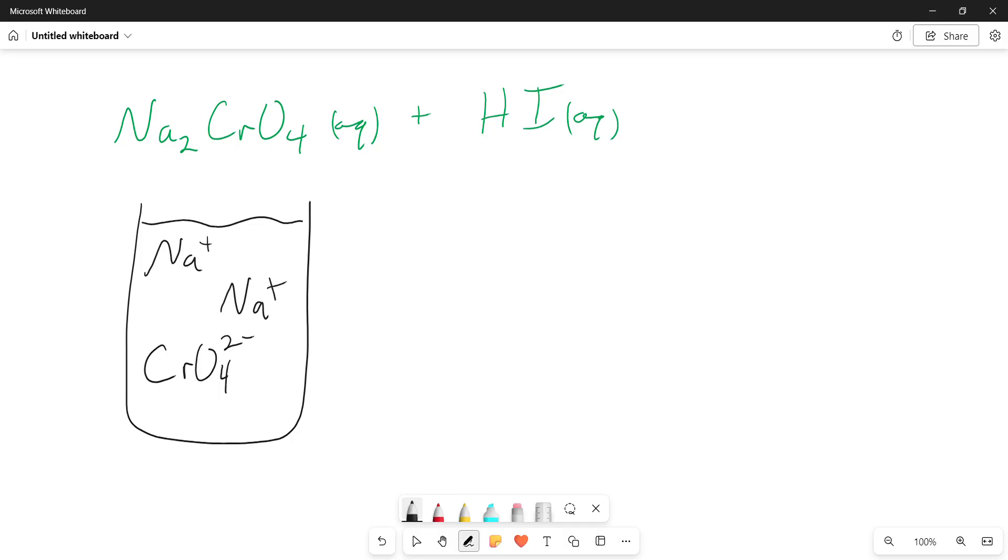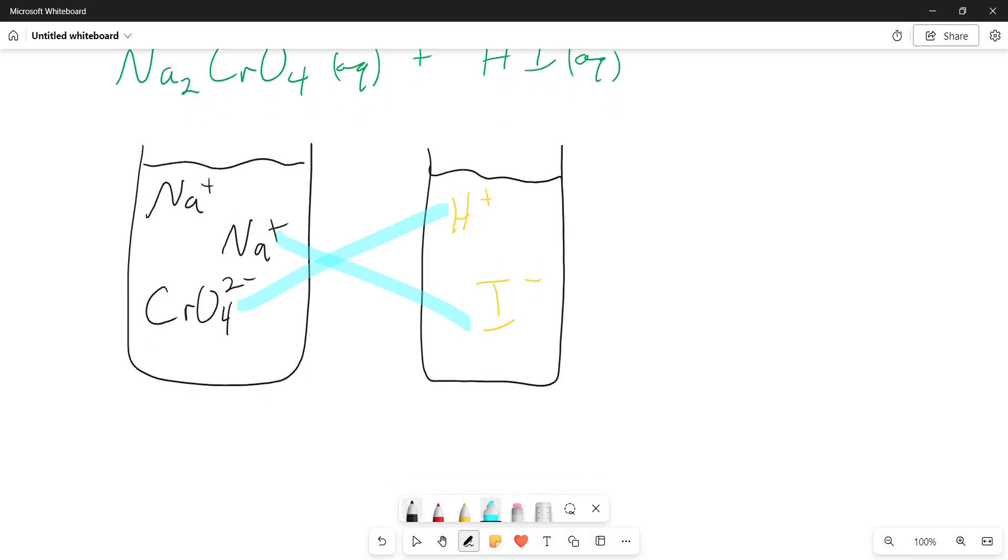Okay, and then our other compound in solution, H plus and I minus. Again, cation with anion, and vice versa. So let's list out our reactants here. 2Na plus aqueous, plus CrO4 2 minus aqueous, plus H plus aqueous, plus I minus aqueous.